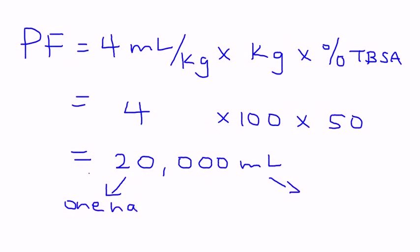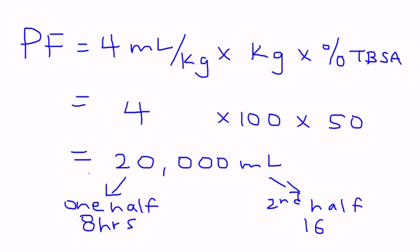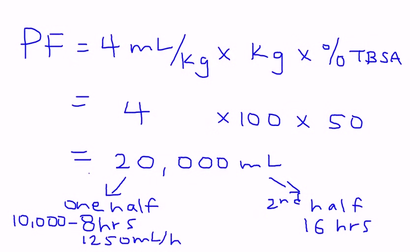The first half is given in the first 8 hours, and then the second half — which would be 10,000 mLs — is given in the following 16 hours. So if you're giving 10,000 mLs over 16 hours, it would be 1,250 mLs per hour. And similarly, if you're giving the second 10,000 mLs in the next 16 hours, it would be given at a rate of 625 mLs per hour. That's essentially the Parkland formula.